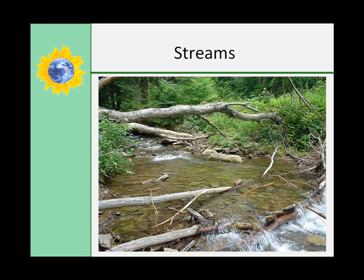Streams are natural channels that convey water downslope by gravity. Although streams vary in size and location, all streams perform three basic geologic processes: erosion, transport, and deposition of sediments. Streams typically originate in hilly or mountainous areas as meltwater from melting ice and snow, beginning in small gullies. As these gullies flow, they erode surrounding rocks and soils into a channel, and broken bits of surrounding rocks are carried in the stream channel as sediment.